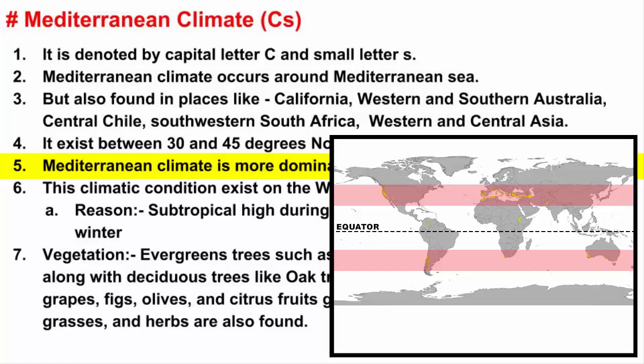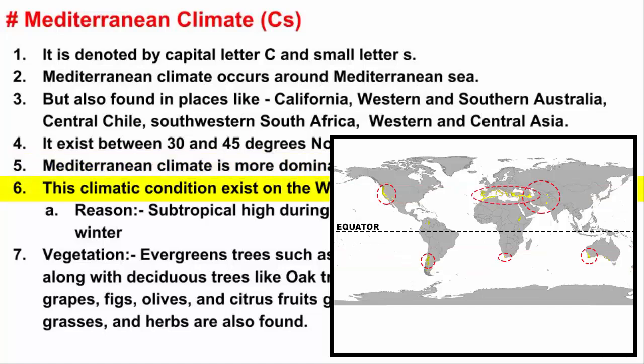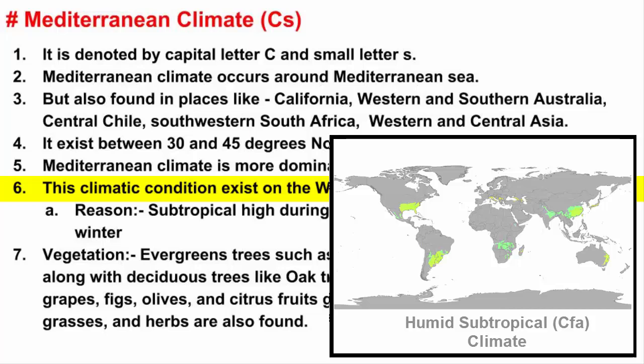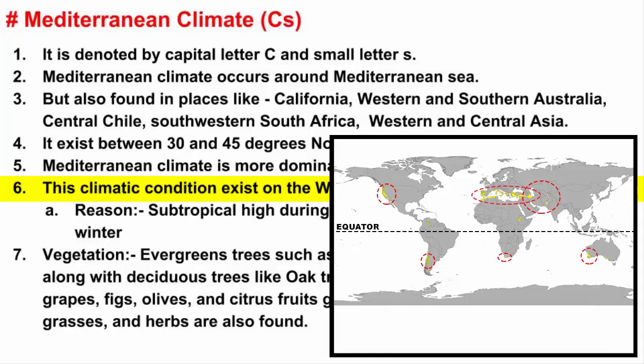If you look at the map carefully, you will find the Mediterranean climate to be on the western coast of continents. If you see the previous video on humid subtropical climate, you will learn that subtropical humid climate exists at the eastern coast of continents. And here, Mediterranean climate exists on the western coast of continents, so please remember this difference.